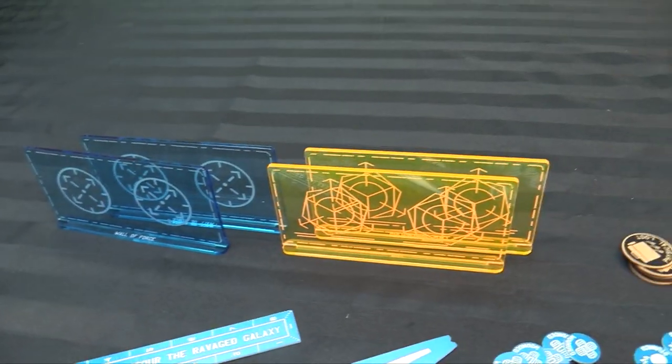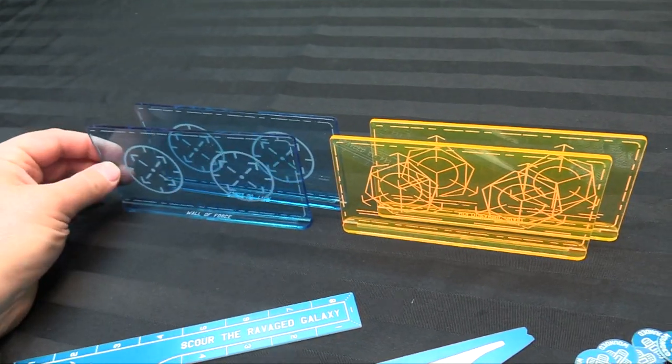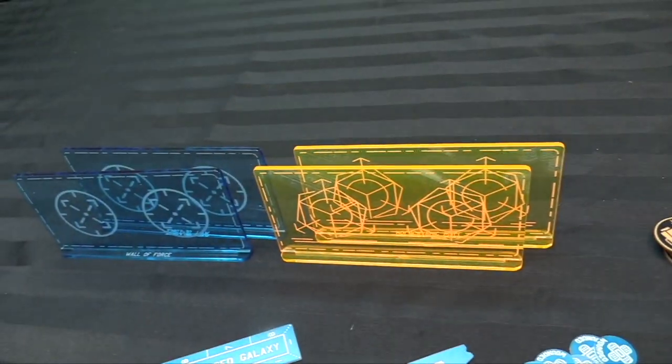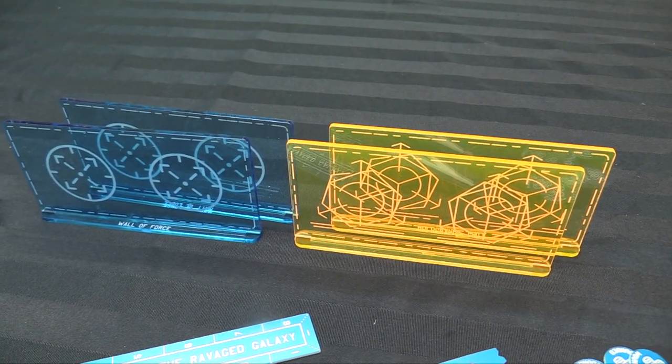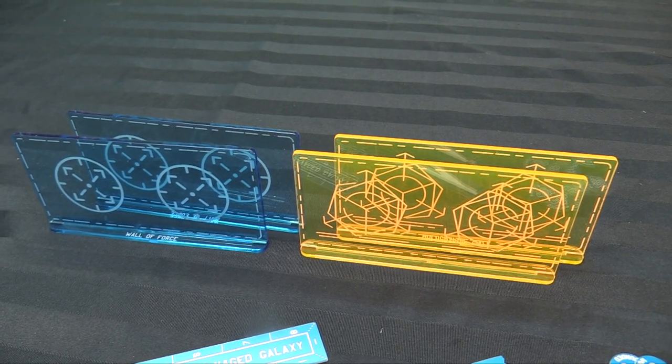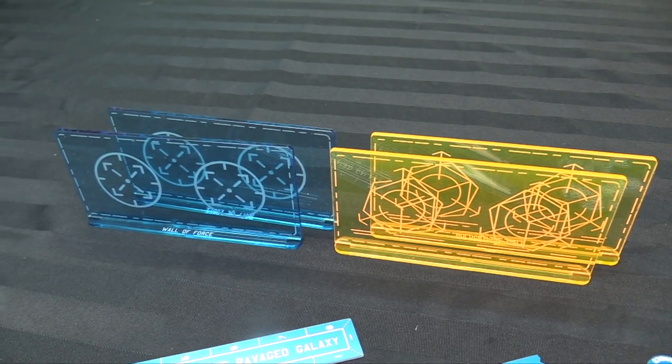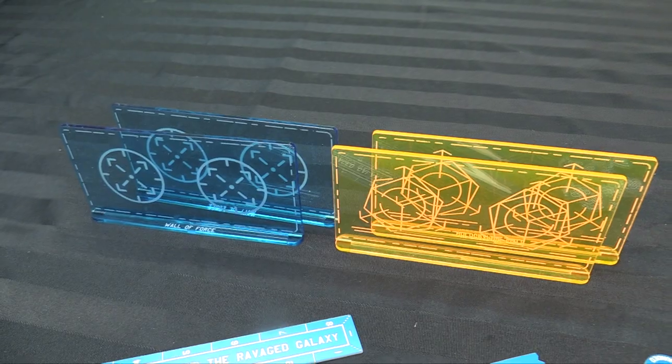Then of course if you've seen Owen abuse it in Frostgrave, he's going to abuse it in Stargrave too. We got Wall of Force and Holographic Wall, the two different wall powers that your captains and first mates can learn. They're cut in acrylic, they're 6 inches long and 3 inches high so they're perfectly sized. And they do add that sci-fi aesthetic to the game so these are really nice.